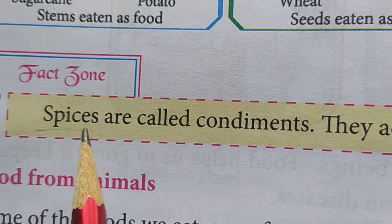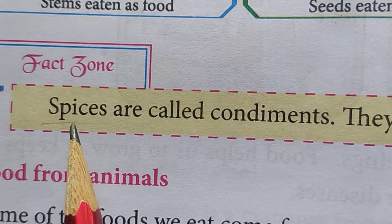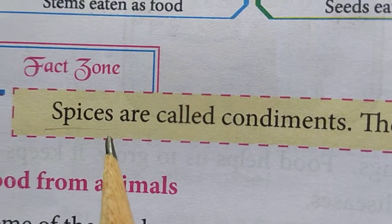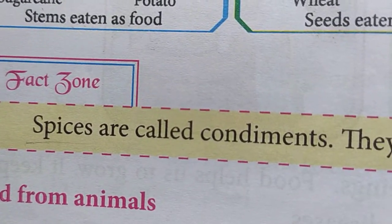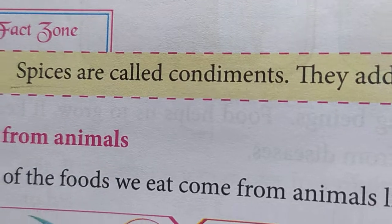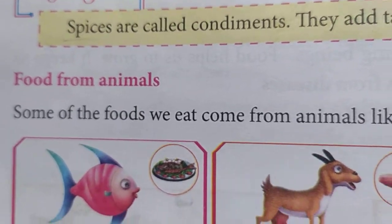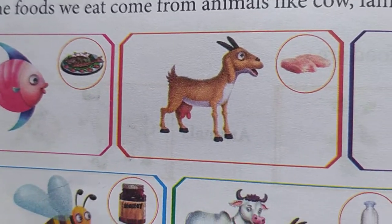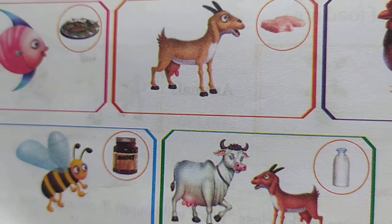Spices include lavangalu, ilai, and others — these are called spices. And the food we get from animals: what type of food do we get from animals?